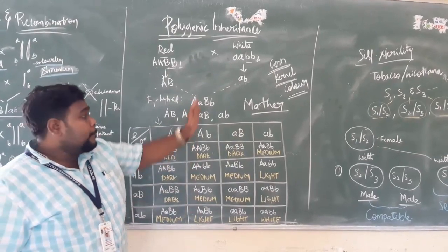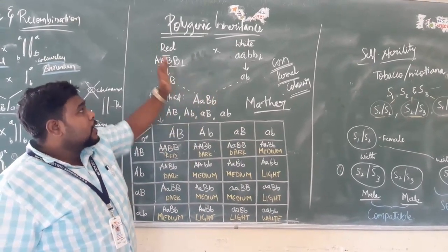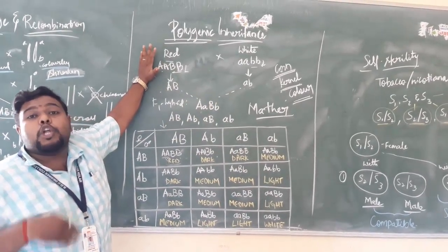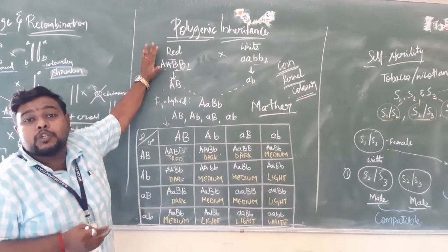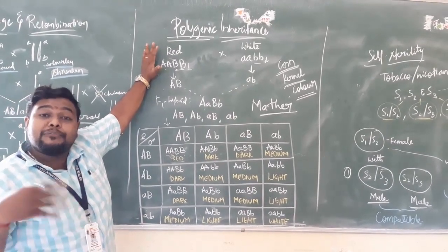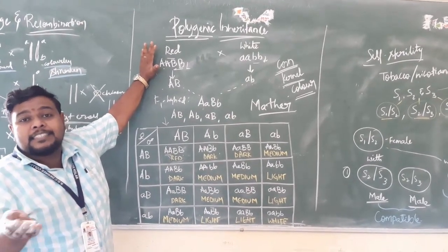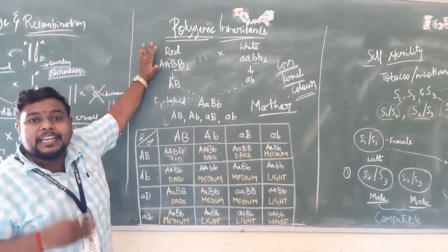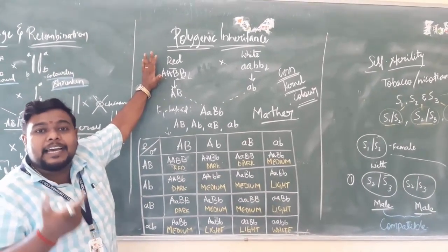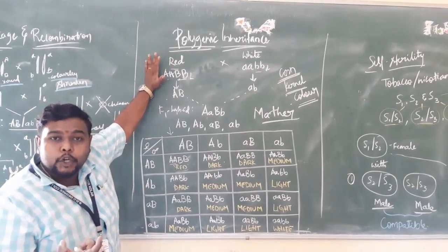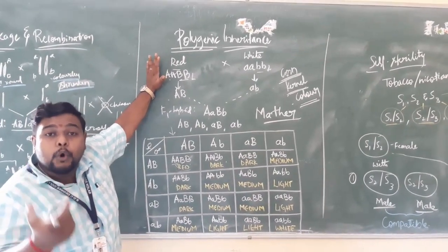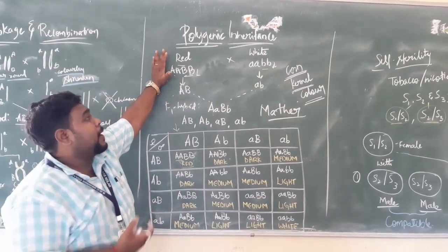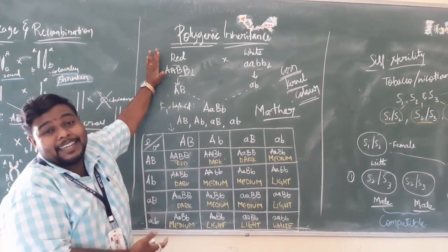This will be an important question — they will ask you about polygenic inheritance. What do you mean by polygenic inheritance? You should define it: polygenic inheritance is a condition where a single character will be controlled by more than two or three pairs of genes.